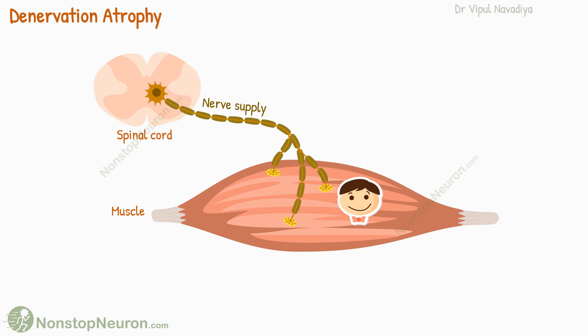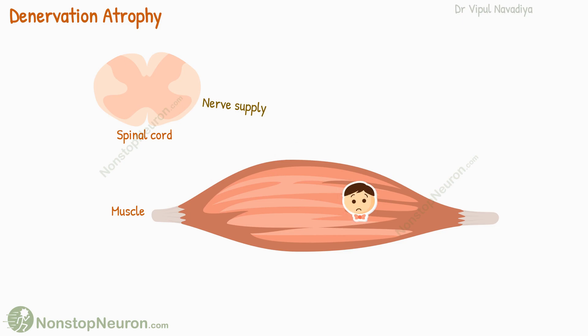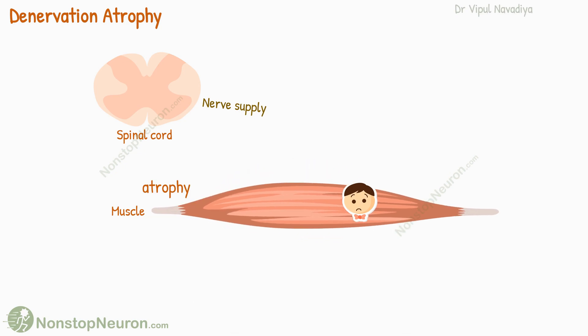However, if the nerve supply to a muscle is disrupted due to injury or disease, the muscle becomes deprived of these signals. Without regular stimulation, the muscle fibers start to undergo a process called atrophy, in which the size and strength of muscle fibers decrease. Such atrophy due to denervation is called denervation atrophy.